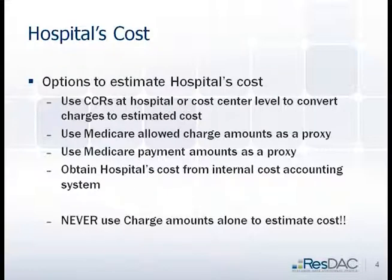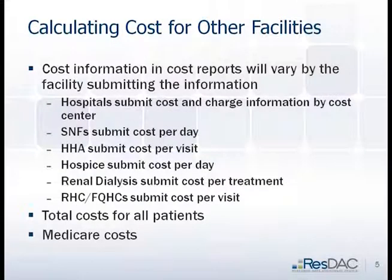Options for estimating hospital costs include cost-to-charge ratios, allowed charge amounts, and payment amounts. You could get it from the internal hospital cost accounting system. A caveat you've probably gotten through the last two days: never, ever use charge amounts alone. If you read an article that only used charge amounts to estimate cost, you have to be suspect. Calculating costs for other facilities — you could look at how they report it in cost reports, cost per day, total costs for all patients, or Medicare costs.